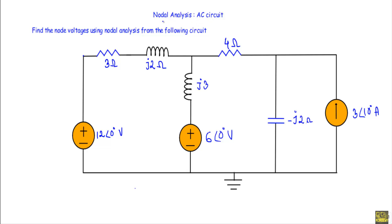In this video I will show you another example of an AC circuit. Here I will show you how to calculate node voltages using nodal analysis method. This is our given circuit — find the node voltages using nodal analysis. In the circuit we have two voltage sources, a current source, two resistances of 3 ohm and 4 ohm, two inductances with inductive reactance j2 ohm and j3 ohm, and a capacitance with capacitive reactance equal to minus j2 ohm.